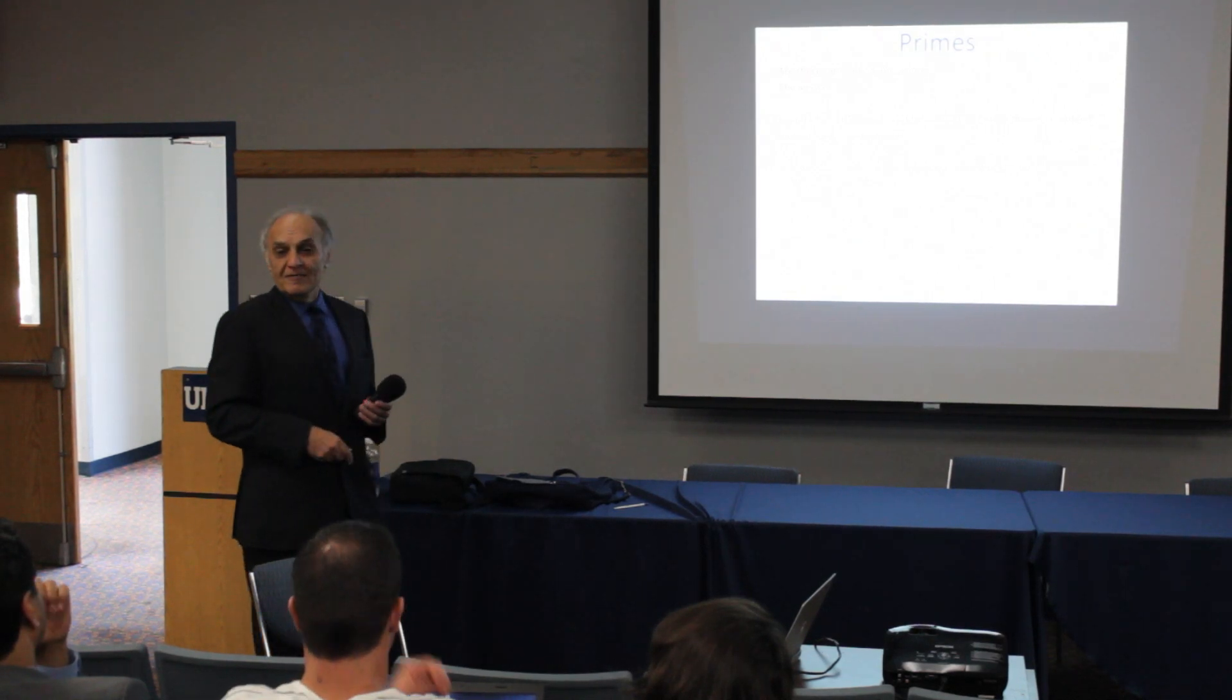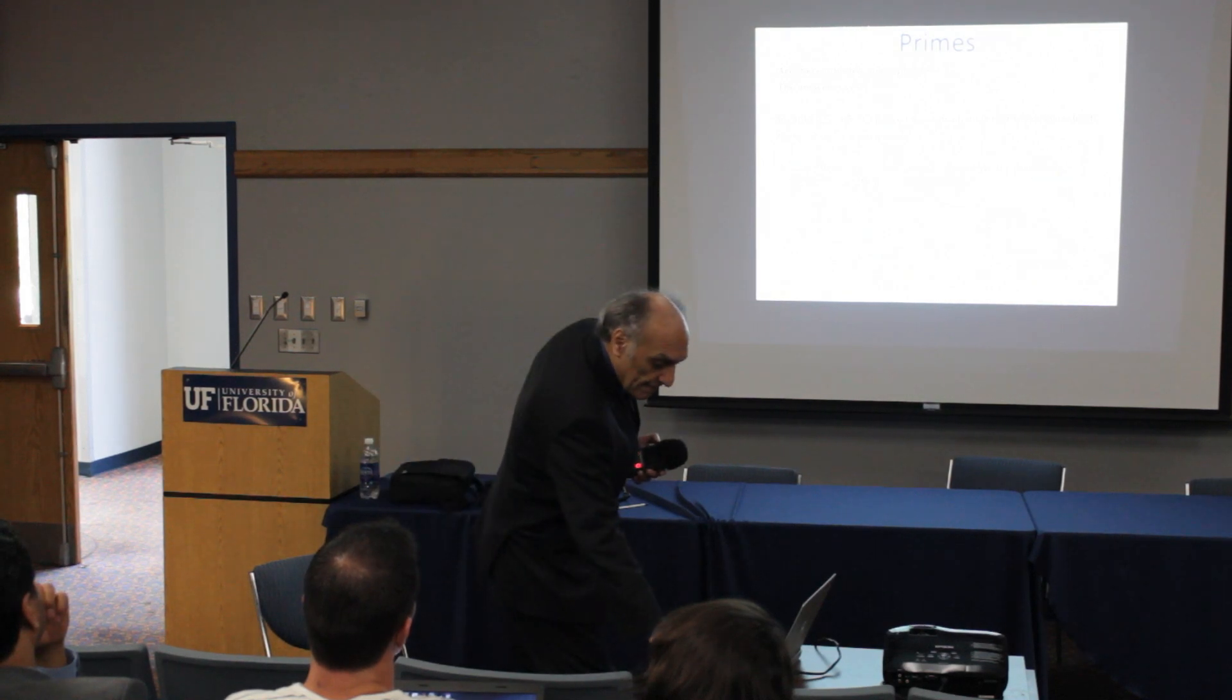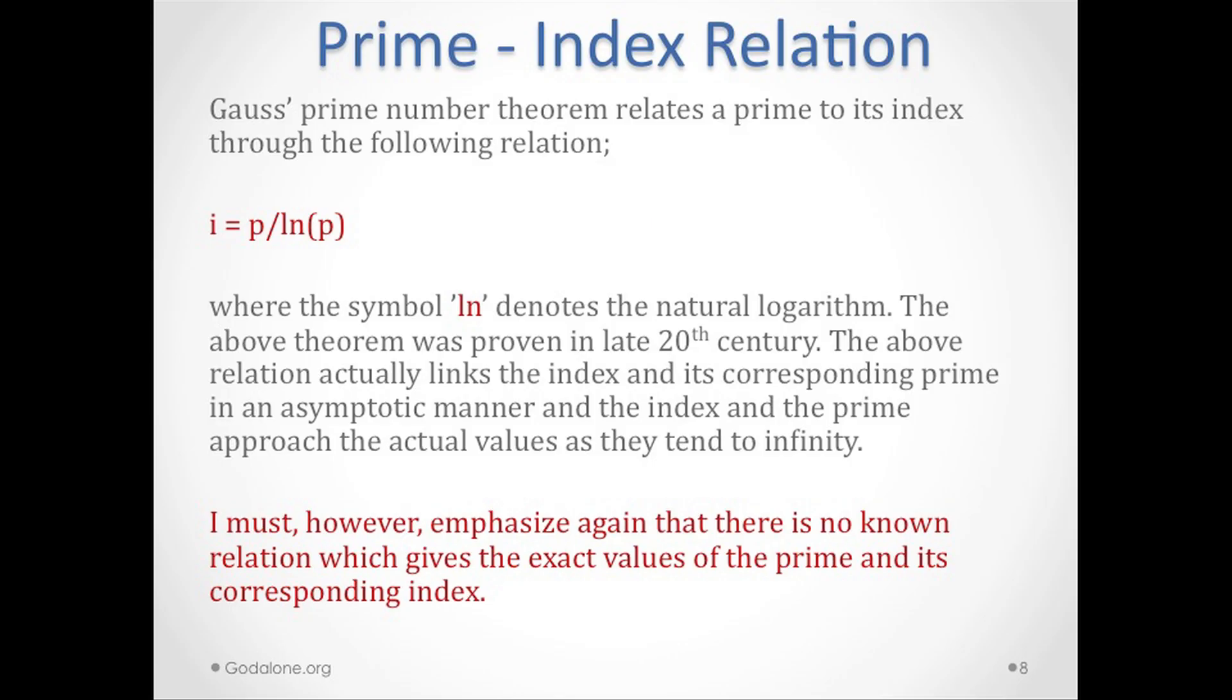Prime index relation: what is the relation between prime and its index or position or rank? As I said, 1143, for example, what is the 1143rd prime? Gauss's prime number theorem relates a prime to its index through the following relation: i = p / ln(p), where ln denotes the natural logarithm. The above theorem was proven in the late 20th century. So the above relation actually links the index to its corresponding prime in an asymptotic manner. It's just an approximation.